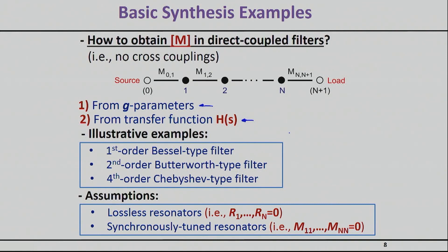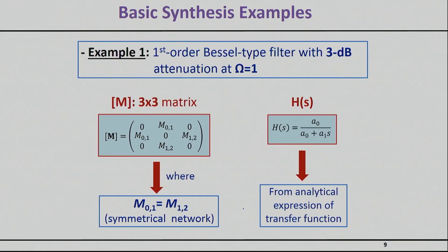So I'm going to basically show you a few different examples outlined here. And for these first examples we're going to basically assume that we have totally lossless resonators, so infinite quality factor, and also synchronously tuned resonators, so you will see that basically all the self coupling elements are basically equal to zero. So let's go for the first example.